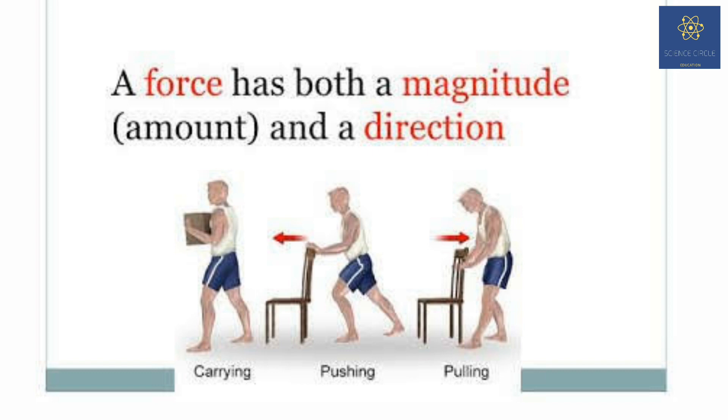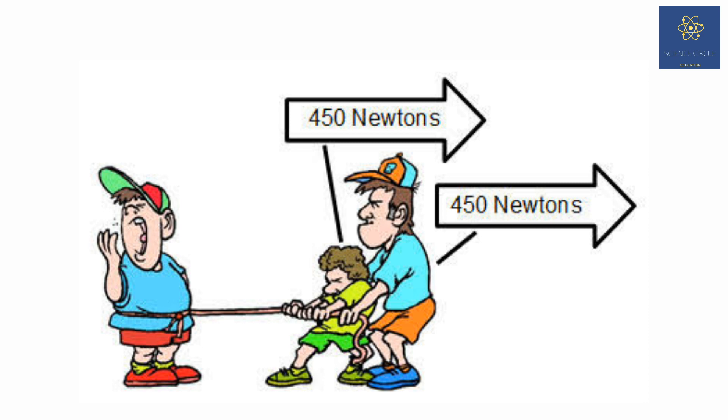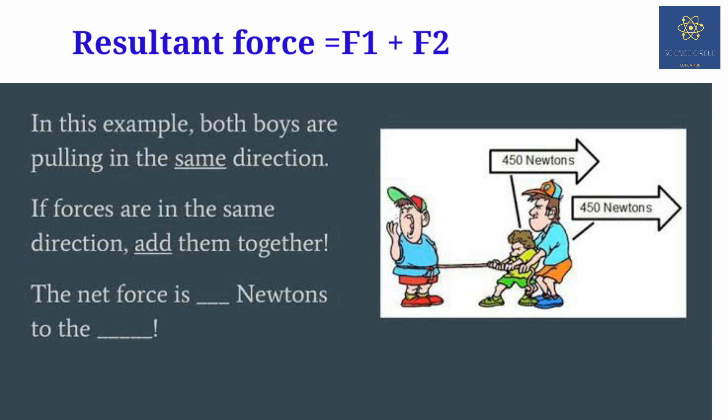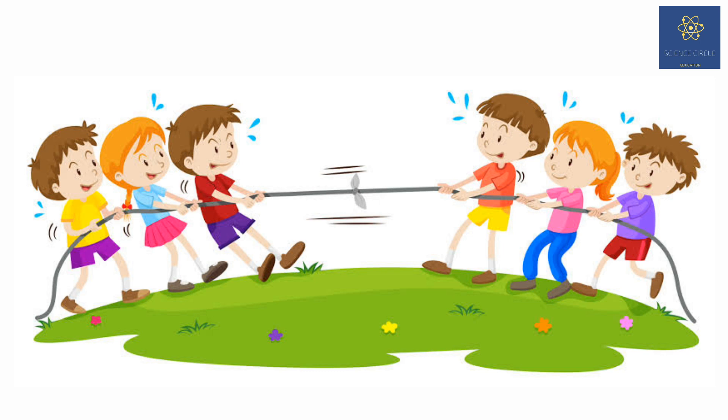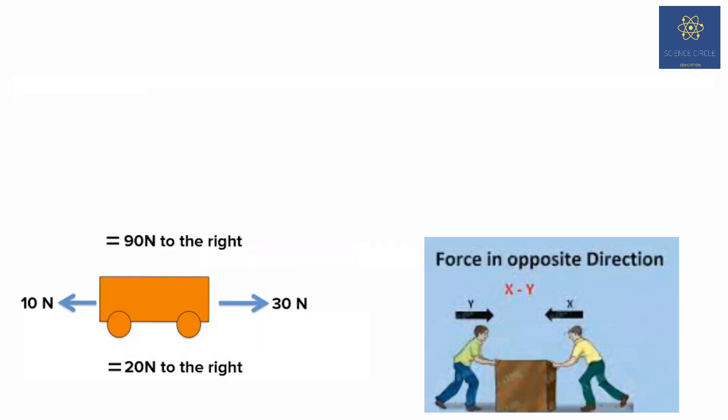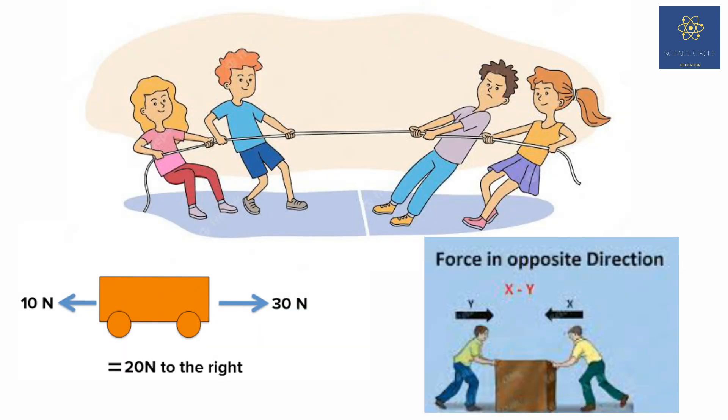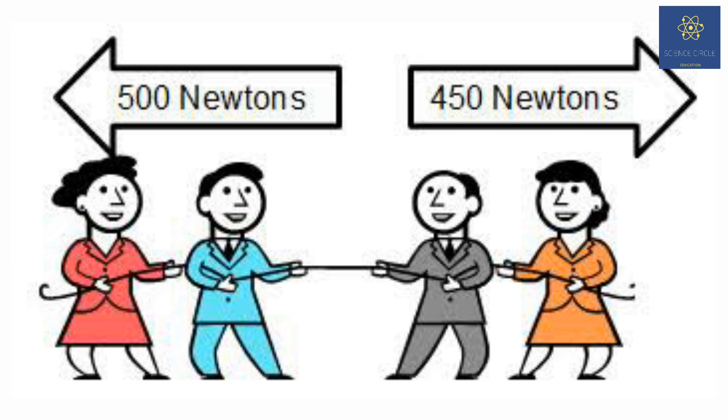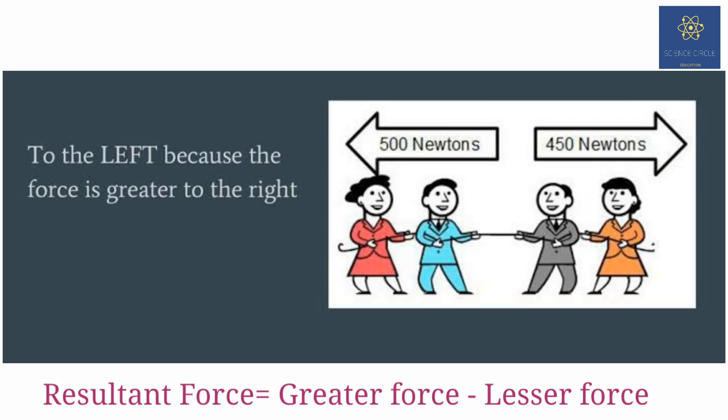We have seen force has magnitude as well as direction. Here two boys are pulling a person in the same direction, so the resultant force acting on the object is equal to the sum of two forces. The net force will be 900 newton. Now if the two forces are applied in the opposite direction, the net force acting on the object is equal to the difference between the two forces. If you calculate here, the net force will be 50 newton, that is 500 minus 450 newton, and the direction will be on the left.